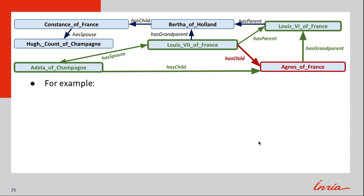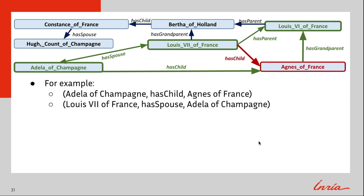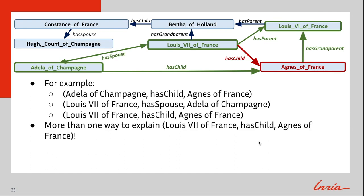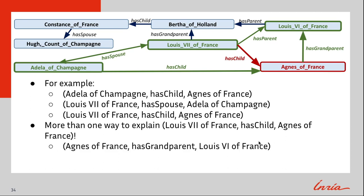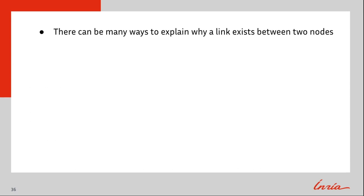As another example, we can define has-child using the has-spouse and has-child relations. Take two triples: Adela of Champagne has child Agnes of France, and Louis VII of France has spouse Adela of Champagne. Using rules and CORAS, we can construct a new triple: Louis VII of France has child Agnes of France. This triple is a fact because Louis VII's spouse has the same child as Louis VII. From the graph, you can see there are indeed multiple ways to explain why Louis VII of France has child Agnes of France. This triple could also be explained by Agnes of France has grandparent Louis VI of France, and Louis VII of France has parent Louis VI of France.